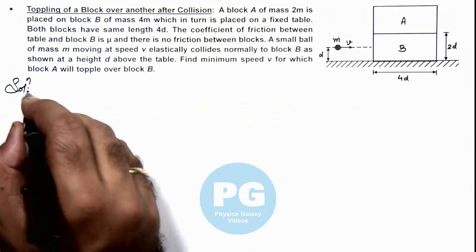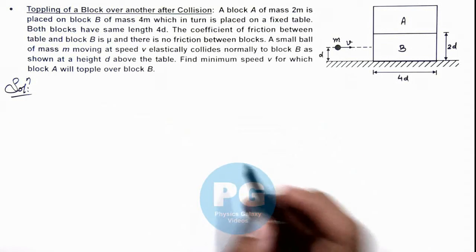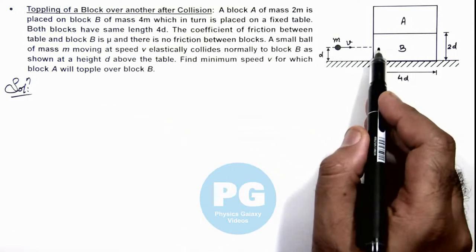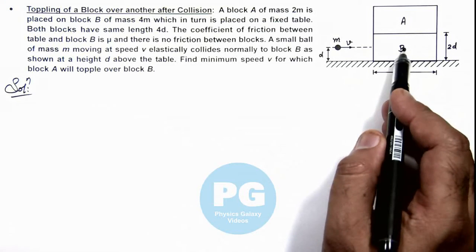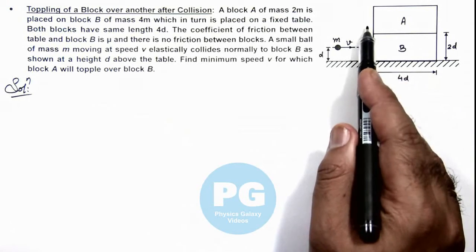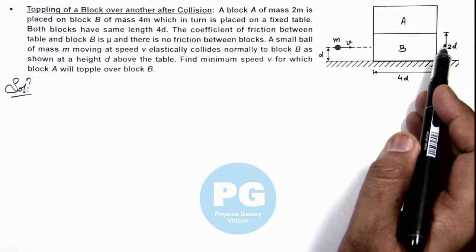So here in the solution we'll approach the problem in a way that we can see after head on elastic collision between m and B, B starts moving. And with respect to B, A is moving toward left or you can say A is at rest and B is sliding toward right below A.